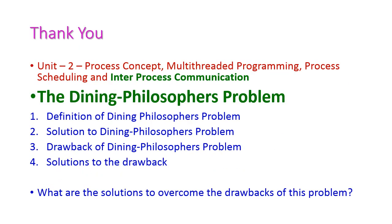Up to this, we have seen the dining philosopher problem. In this class, we have seen the definition, the solution to the problem, the drawbacks — that is the deadlock problem — and the solutions to the drawback. Now, it is question time: What are the solutions to overcome the drawback of the dining philosopher problem? Students, please write your answers in the comment box. In the next class, we will see another important topic from operating systems. Thank you.